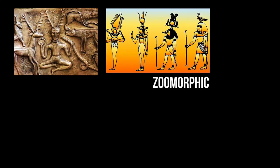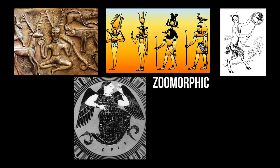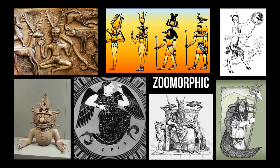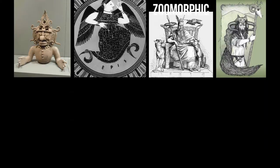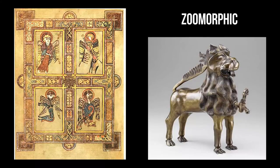Deities with horns, wings, beaks, and tails are common in many mythologies, including Celtic, Egyptian, Greek, Roman, Mayan, Norse, and Slavic spiritual beliefs. Depictions of zoomorphic characters are common throughout medieval illustrations and metalwork.